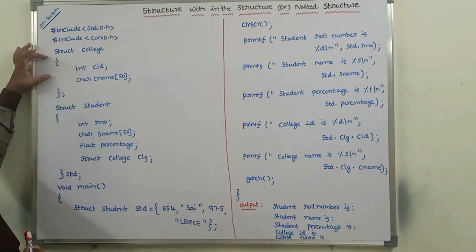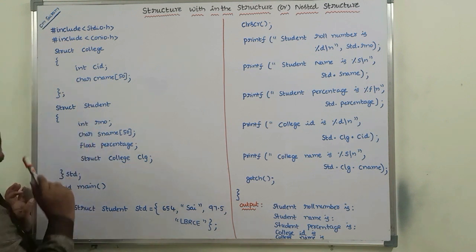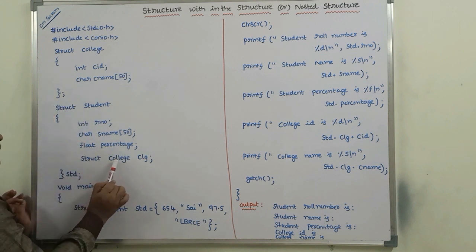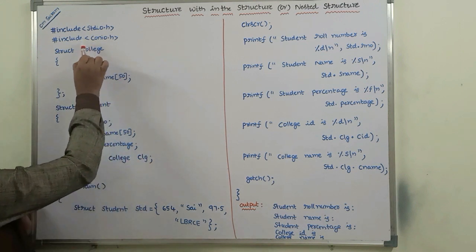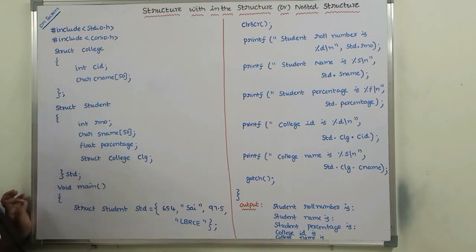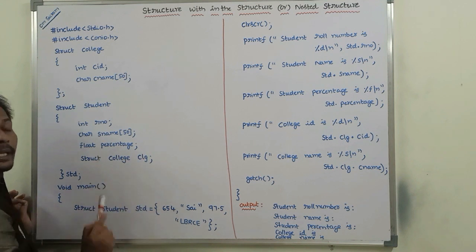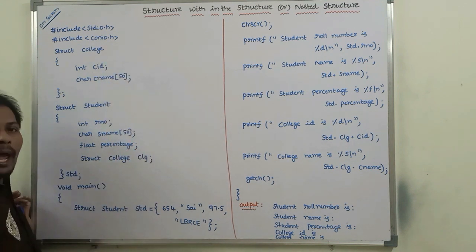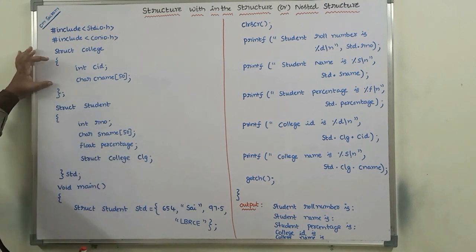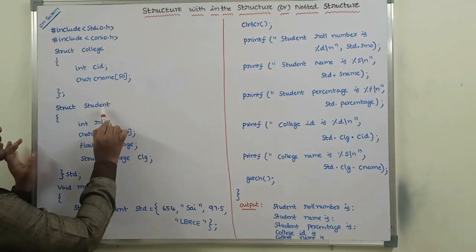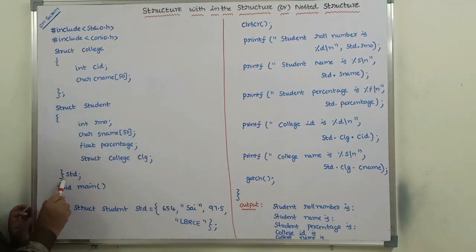In addition to these three data members of the student structure, this entire college structure can be declared as a data member in the student structure: struct college COLG. The structure name is college and the variable created for this structure is COLG. This entire structure is declared as a data member in the structure student.